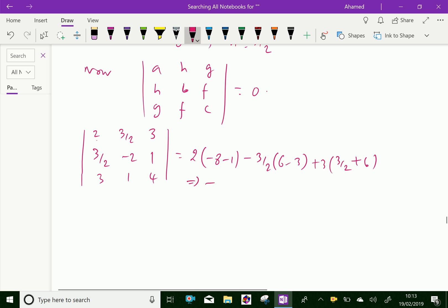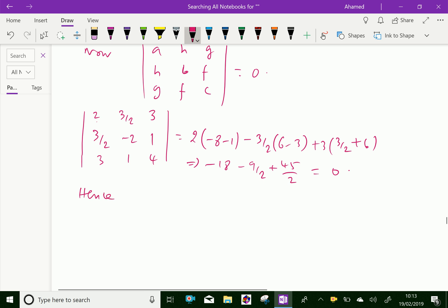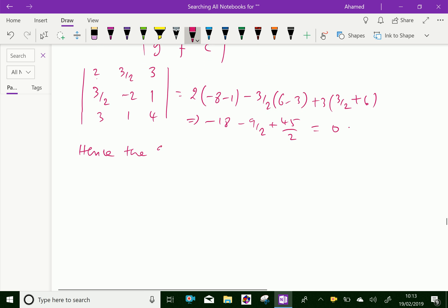Which gives -18 - 9/2 plus 45/2, which gives, by simplification, it becomes 0. Hence, you can see that the given equation represents a pair of planes.